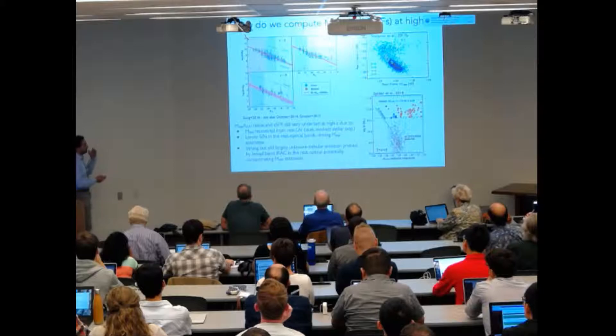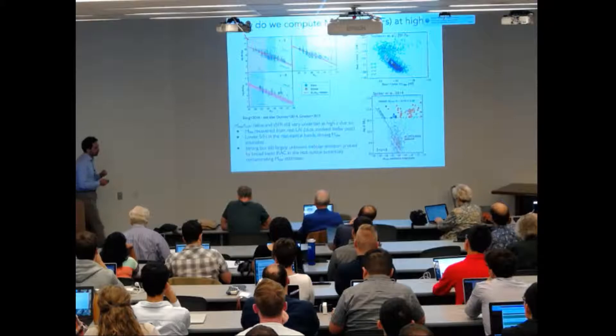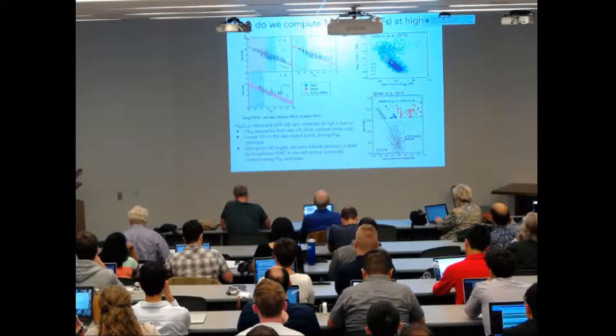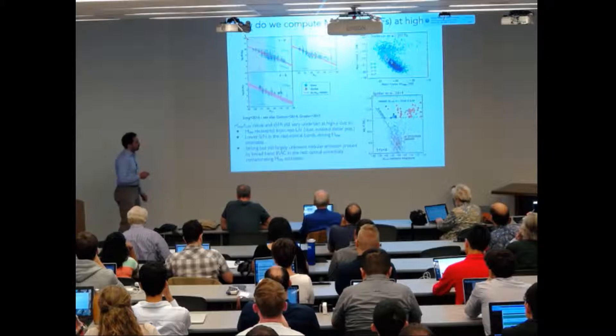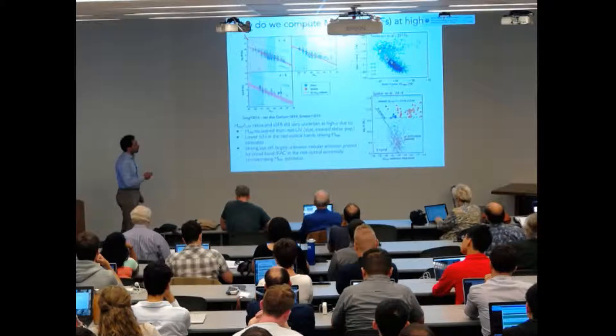Measuring stellar mass function at high redshift is challenging. One common way of doing it is through stellar mass to rest frame UV light ratios, but this introduces problems because the rest frame UV is very sensitive to dust attenuation, which we don't know very well at high redshift, and to evolved stellar populations.